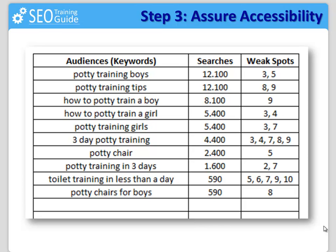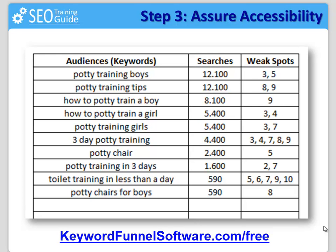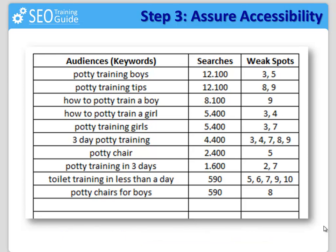To get access to the free version of Keyword Funnel Software, go to keywordfunnelsoftware.com/free. If you prefer to do this all manually, please refer to the steps we have outlined in the video and you are ready to go. Now you are done with step 3. This is absolutely enough for you to start looking for a winning domain name and install your brand new website.